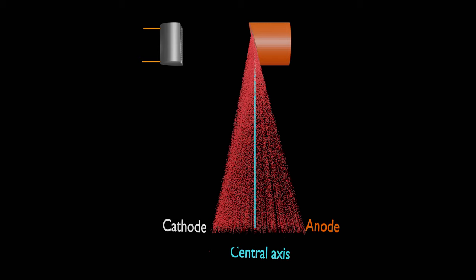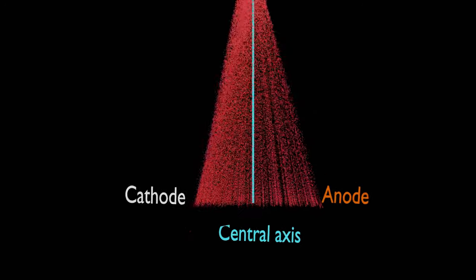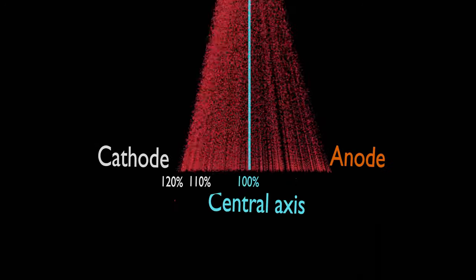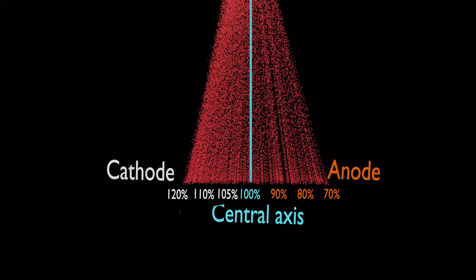The central ray or axis of the useful beam is an imaginary line generated by the centermost x-ray in the beam. If the radiation intensity along the central ray is designated as 100%, then the intensity on the cathode side may be as high as 120%, and that on the anode side may be as low as 70%.